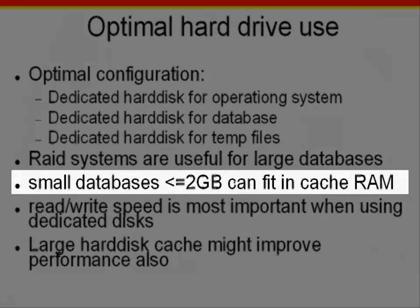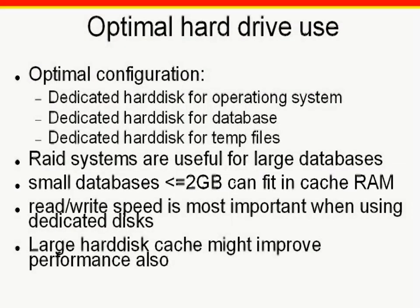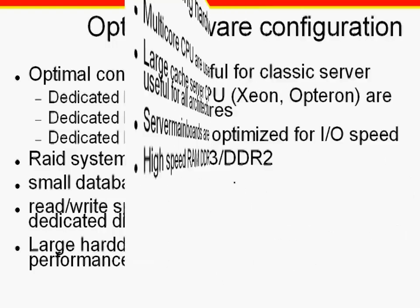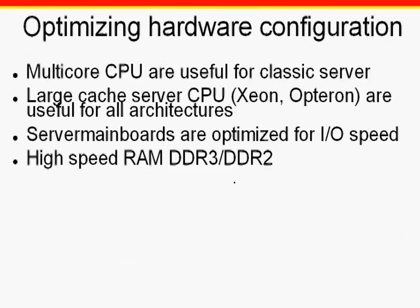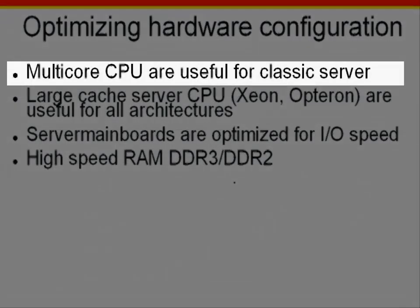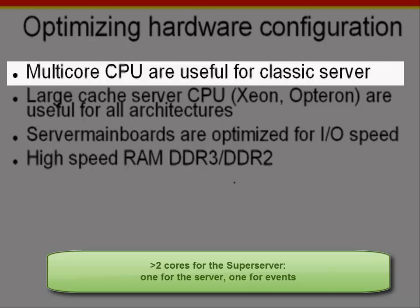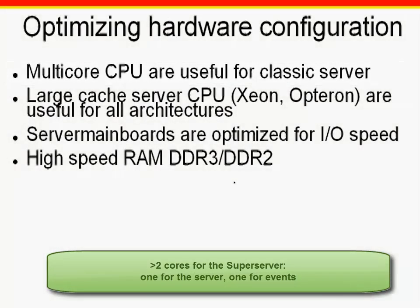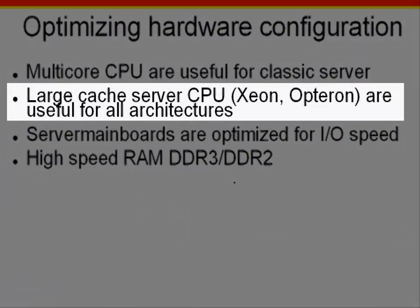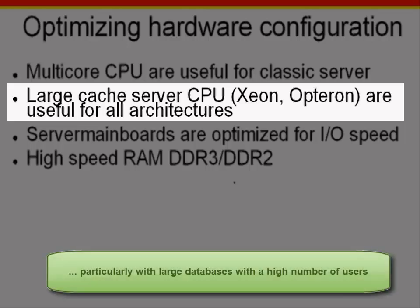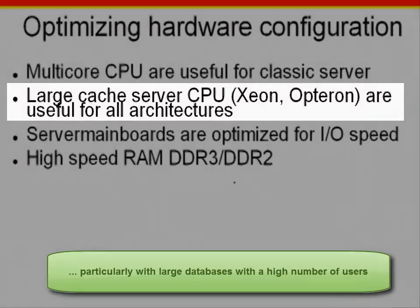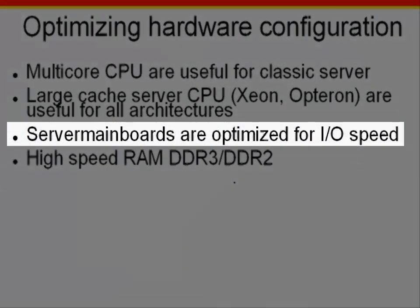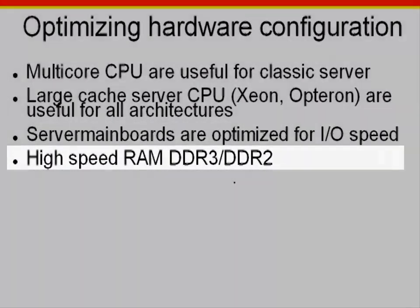Small databases up to 2GB can fit in the cache RAM — that can be the database cache RAM or just the Windows cache RAM. When optimizing hardware configuration, take into consideration the following factors. Multi-core CPUs are useful for the Firebird Classic server; at least two cores are advisable for the Super server — one for the server itself and another for events. Large cache server CPUs, Xeon and Opteron, are useful for all architectures, particularly with large databases with a high number of users. Server mainboards are optimized for IO speed, and high-speed RAM DDR3 or DDR2 is certainly recommendable.